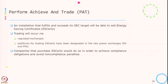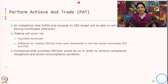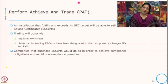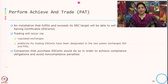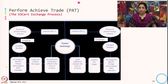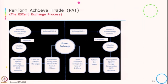An installation that fulfills and exceeds its SEC target will be able to sell Energy Saving Certificates. If they are saving more than the target, they can sell the Energy Saving Certificate known as ESCERT. So the name of the commodity in this trading scheme is ESCERT, and they can sell it if they have achieved more than the energy saving targets given by the regulator. Trading occurs through regulated exchanges — the designated power exchange platforms are IEX and PXIL. Companies that purchase ESCERTs do so in order to achieve their compliance obligation and avoid non-compliance penalties.